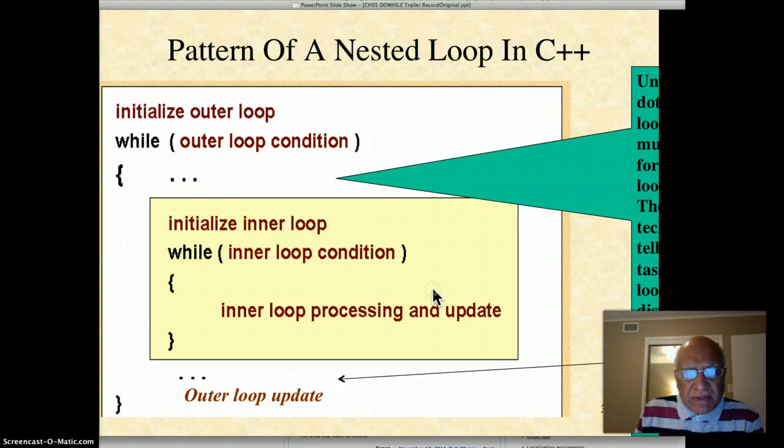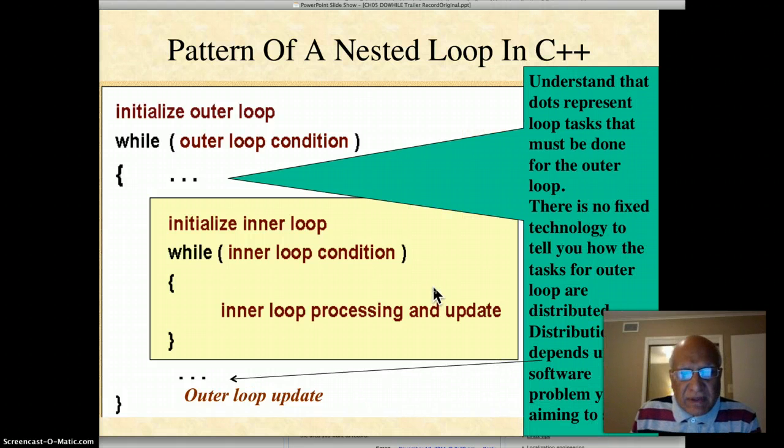One important thing we want to tell you about is the technological issue - students have problems with it until they master it. The dots I'm showing (there may be more) represent loop tasks that must be done for the outer loop. There is no fixed technology to tell you how the tasks for outer loops are distributed.